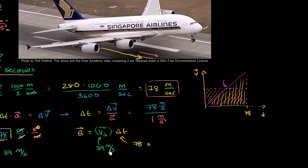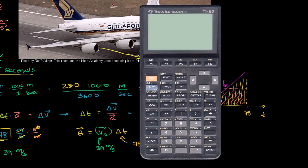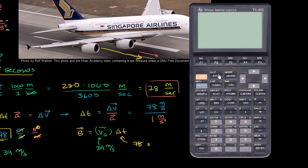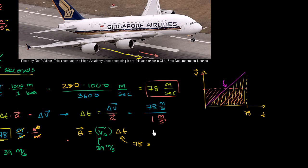So our average velocity is 39 meters per second times 78 seconds, and let's just get our calculator out for this. We have 39 times 78 gives us 3,042. So this gives us 3,042, and then meters per second times second just leaves us with meters.